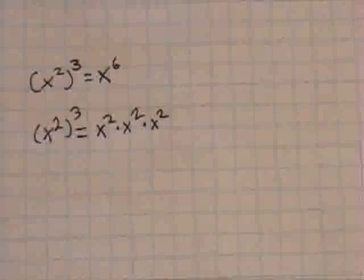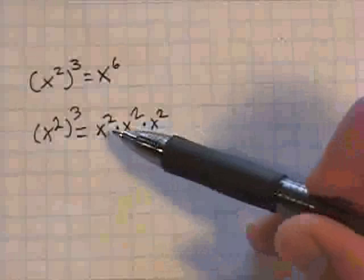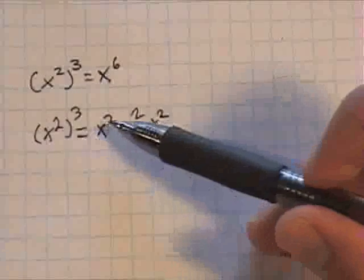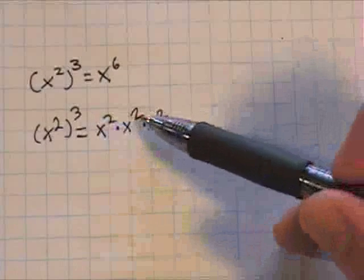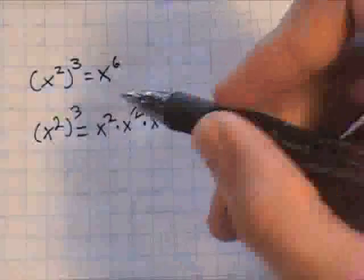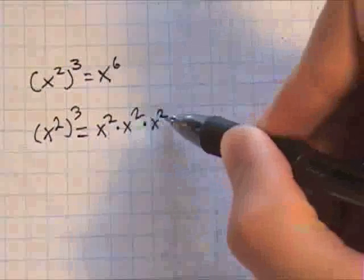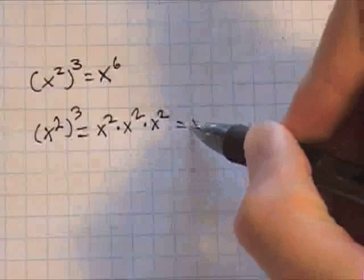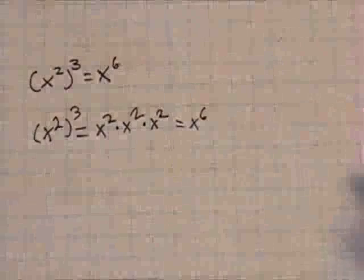And we know that if you're multiplying the same base, you add the exponents, right? So 2 plus 2 plus 2 equals 6, and it's the same thing.